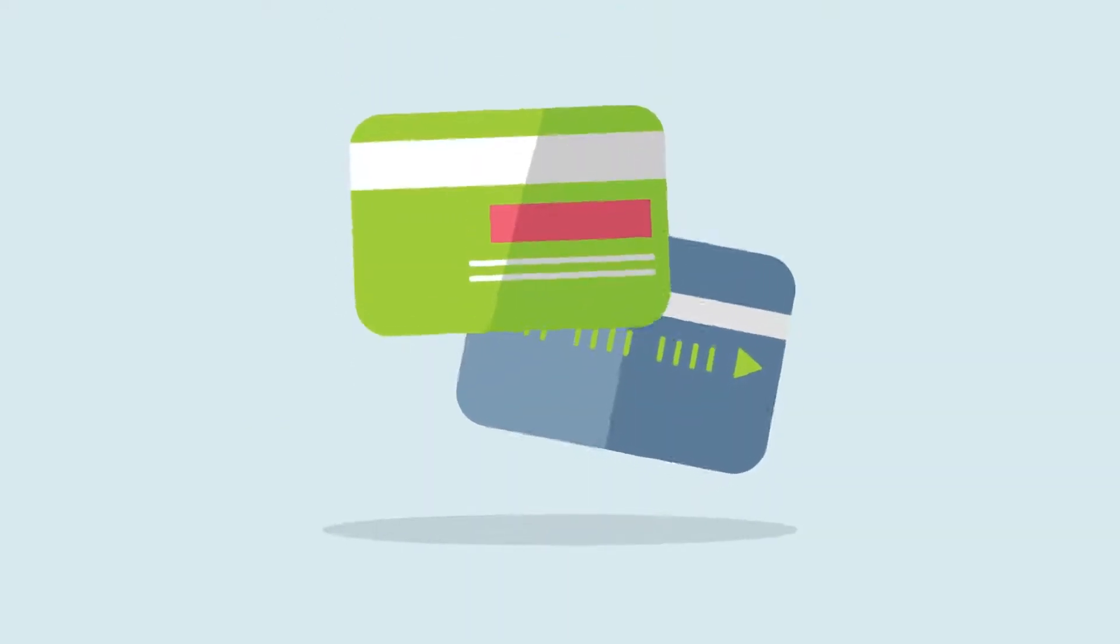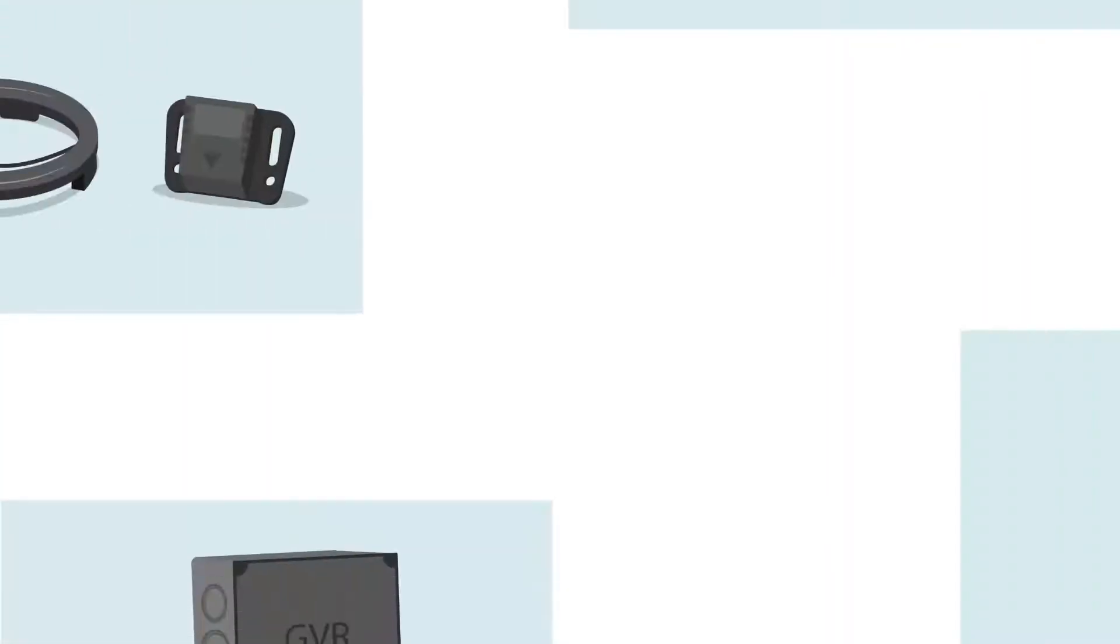Allowing customers to automatically refuel with no need for cash or card payments. AVI is a simple and easy to install system, composed of four parts.